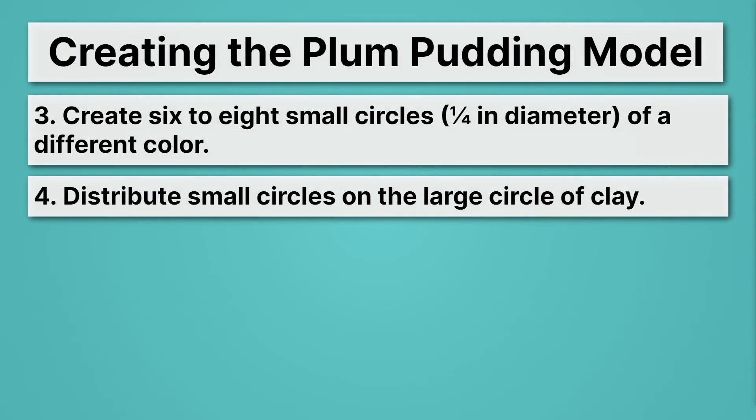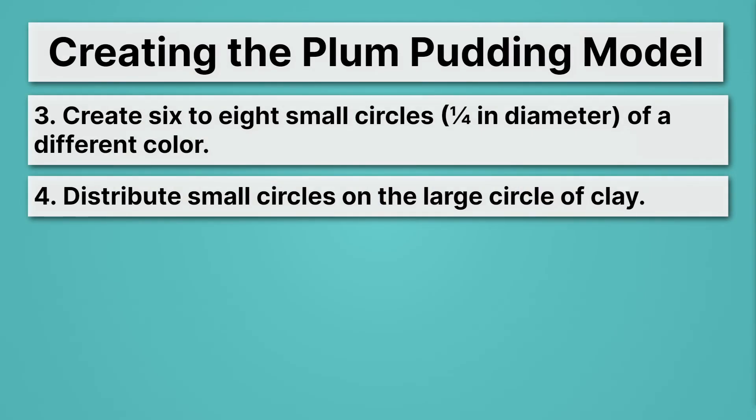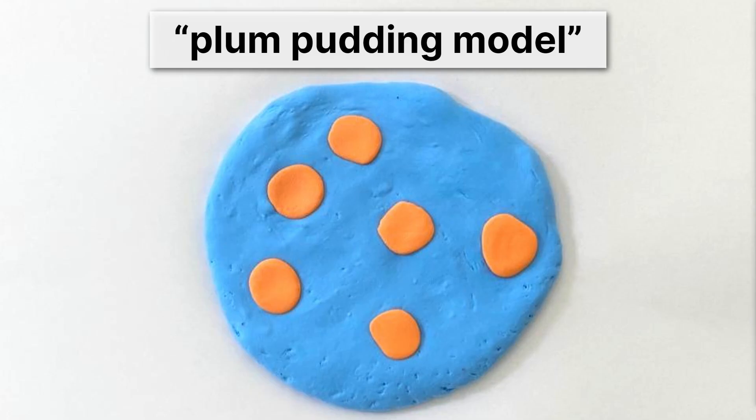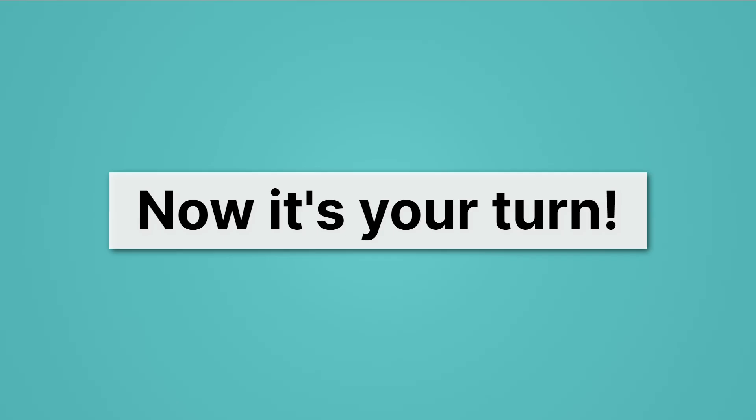Then we'll take those and we'll distribute the small circles on the large circle of clay, and we'll end up with a picture like this, where our electrons are smeared out on this plum pudding model. Now it's your turn to go build the rest of the models of the atom.